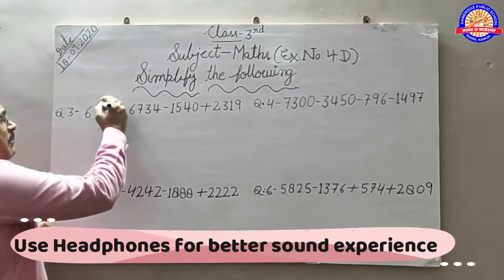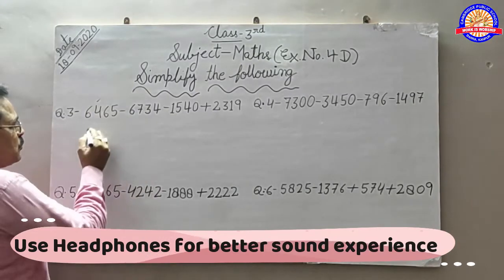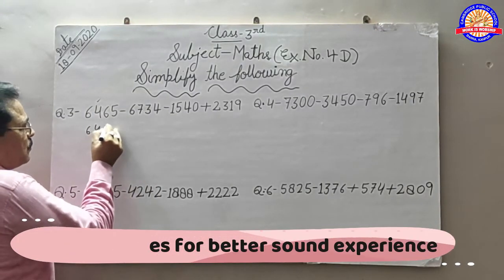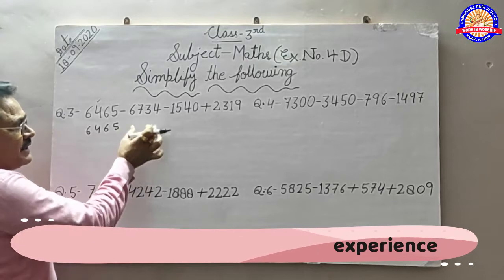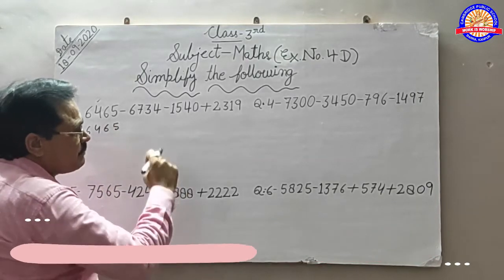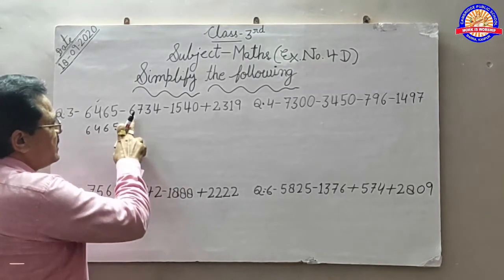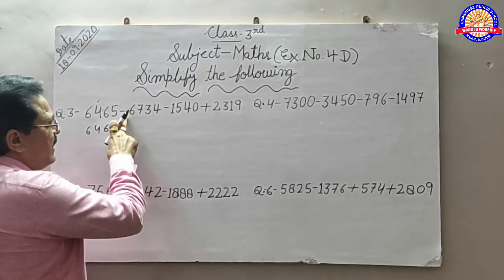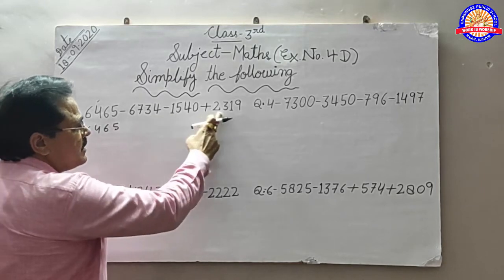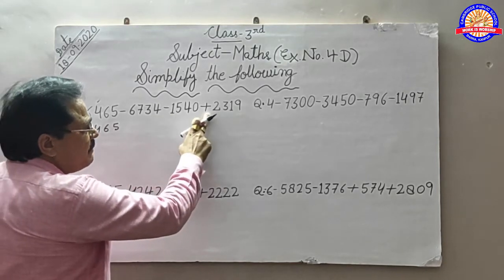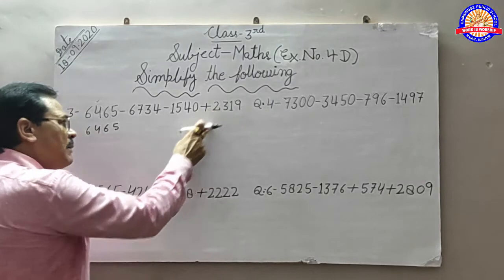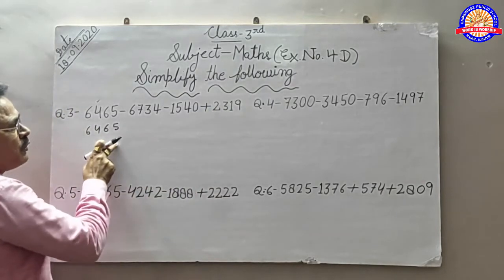Firstly, write the numbers: 6, 4, 6, 5. Now you can see the plus sign. Which number is minus? This number is minus, this number is minus, this number is minus. It is plus here. So we can see first: